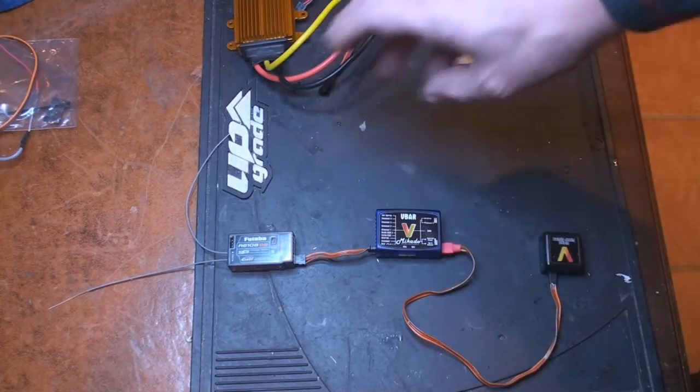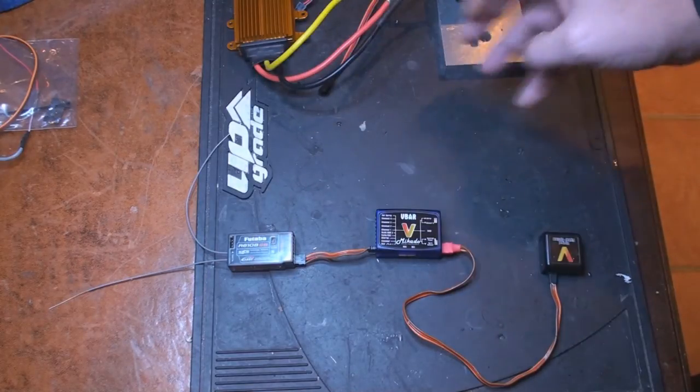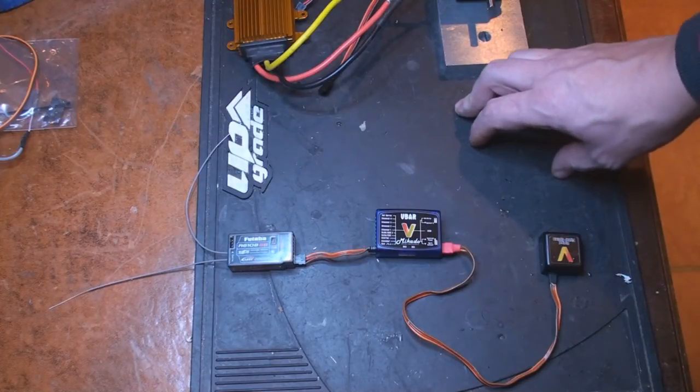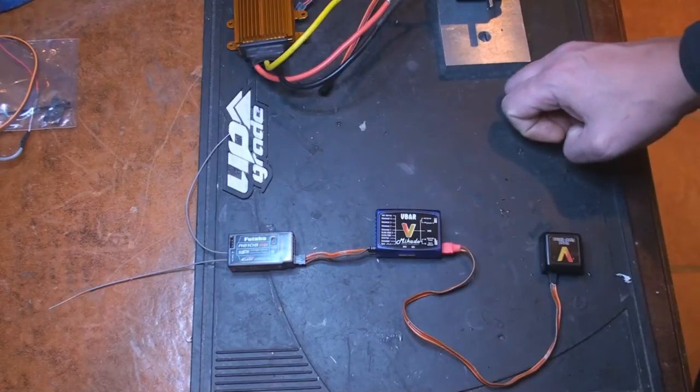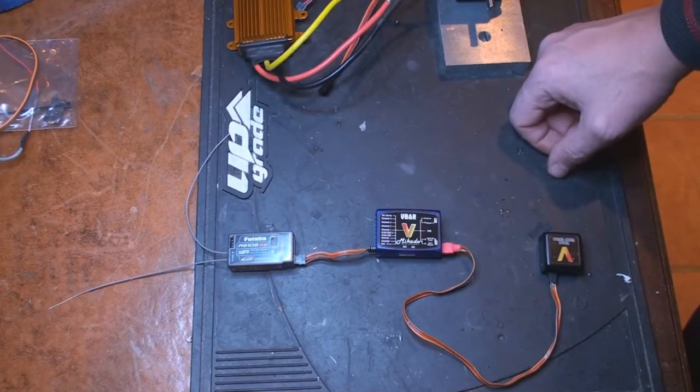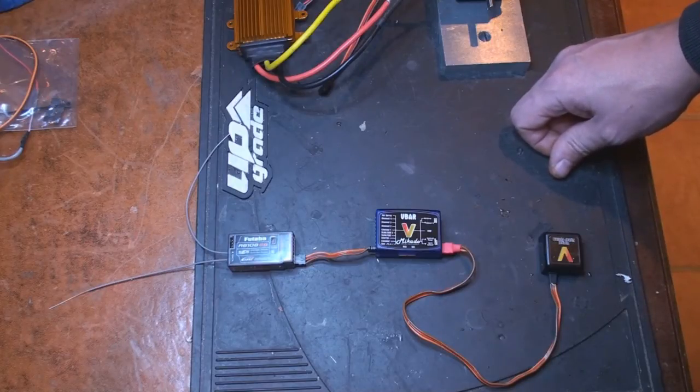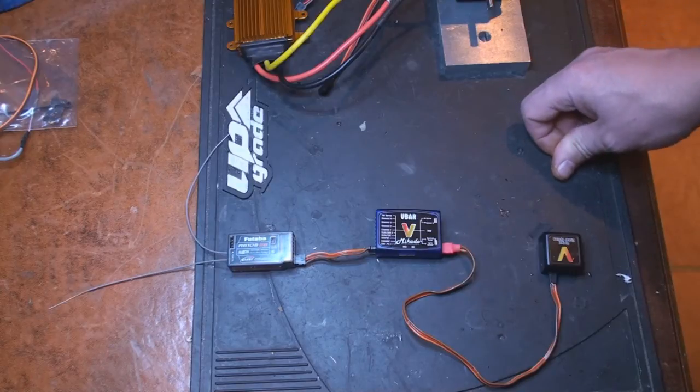The reason why they have all these different options is because it will depend on which type of connection you're running and if you have a built-in BEC or power through the speed controller.